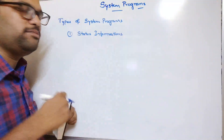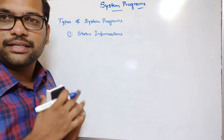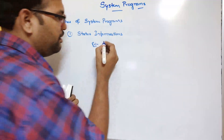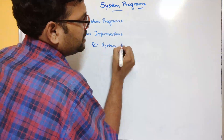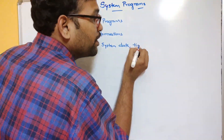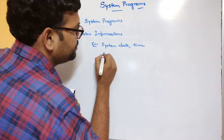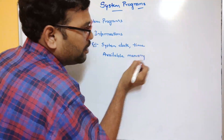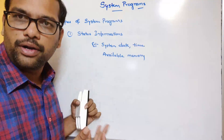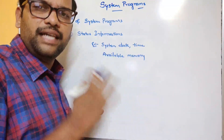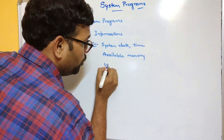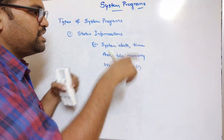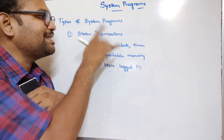Status information programs provide information regarding the status of the system — for example, the system date, time, available memory (how much memory is available), and how many users have been logged into the system. All complete status information is provided here.